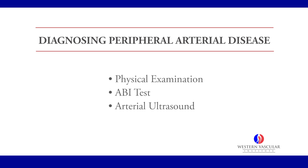Oftentimes we can diagnose peripheral vascular disease with physical examination and symptoms alone, or we can diagnose it with in-office screening tests such as an ABI test, which is a blood pressure measurement comparing the arm and ankle pressures to detect blockages in the lower legs, as well as an arterial ultrasound of the lower legs or aorta to detect any blockages.